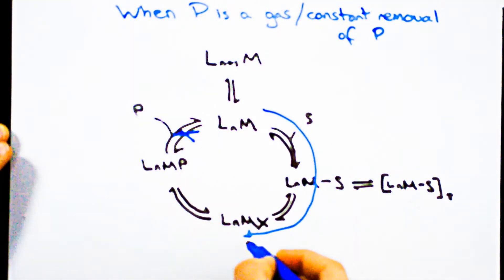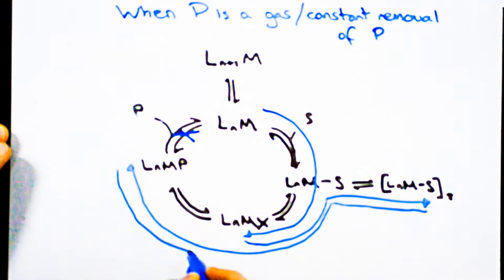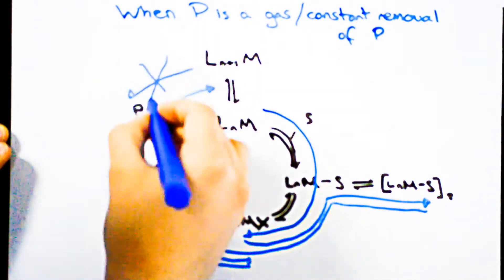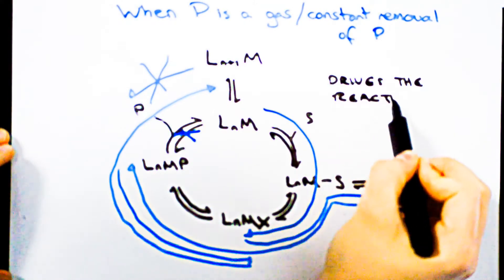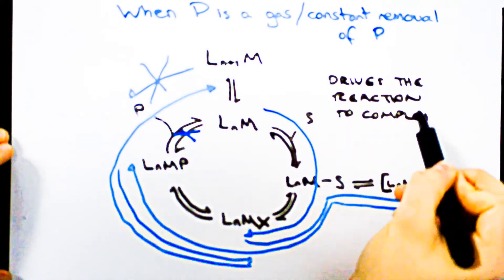By modifying the reaction such that a gas is released, the product will bubble out of the solution, or by simply removing the product when it's formed, we block the reverse reaction and thereby force the reaction forward.